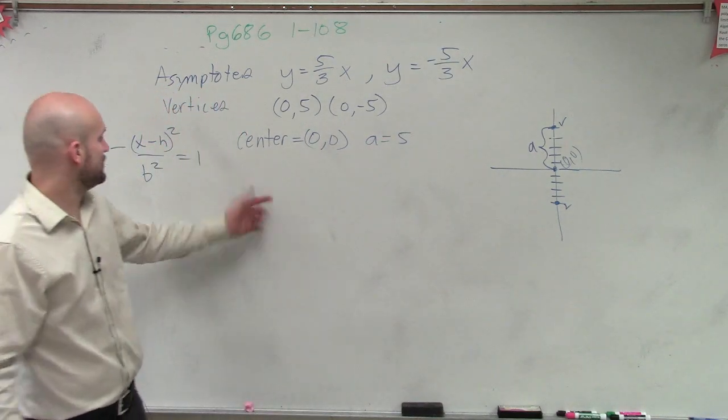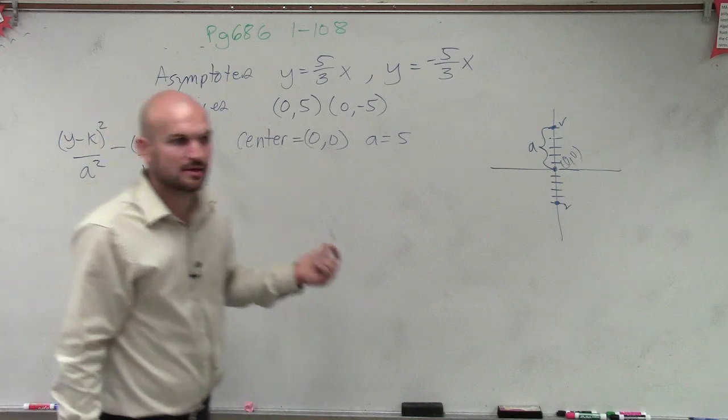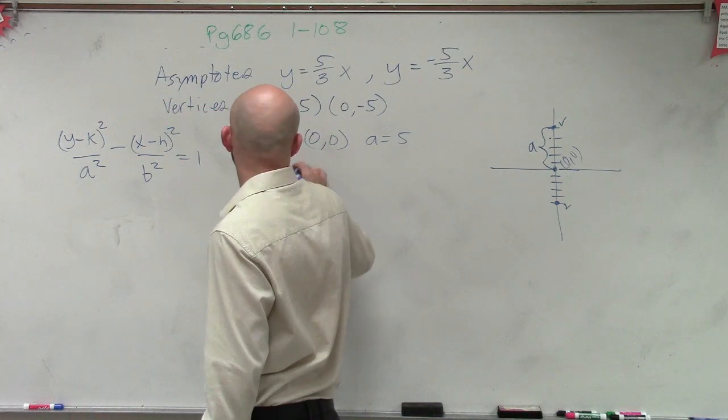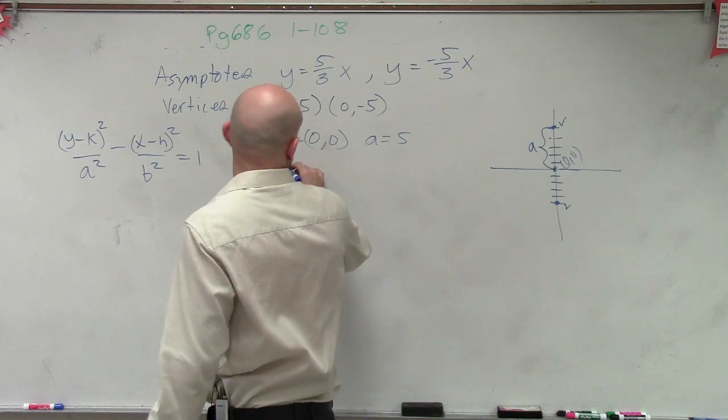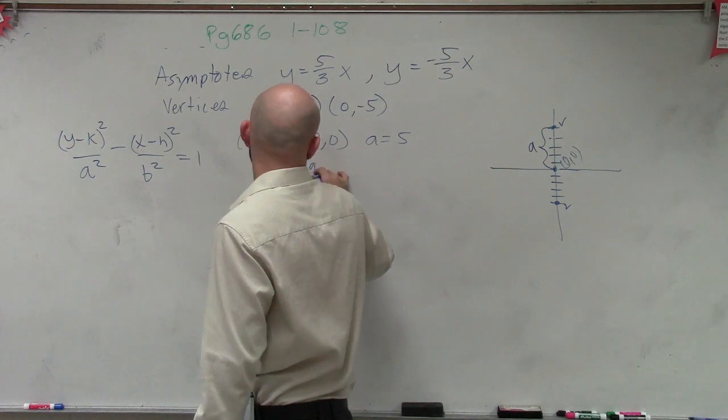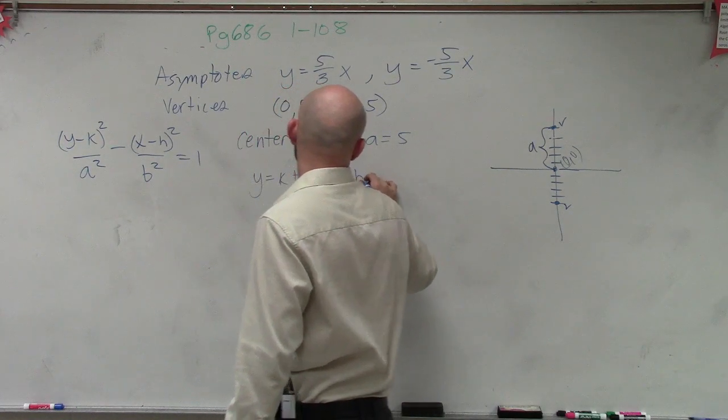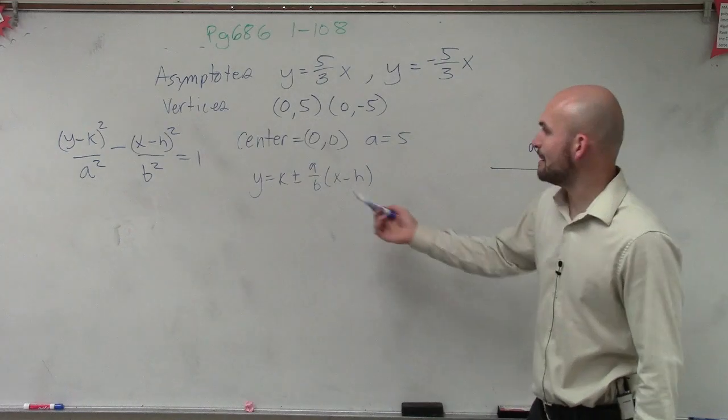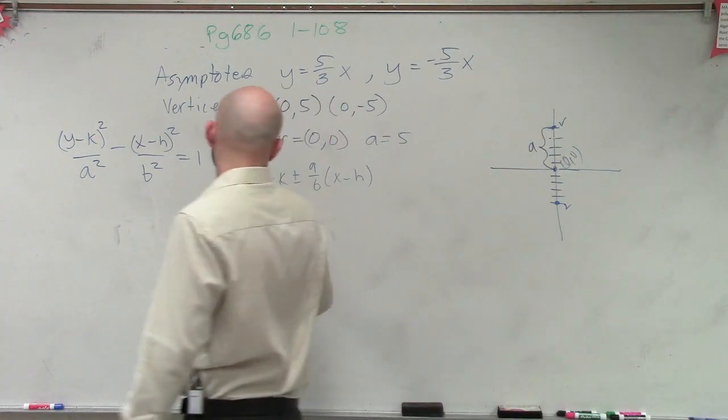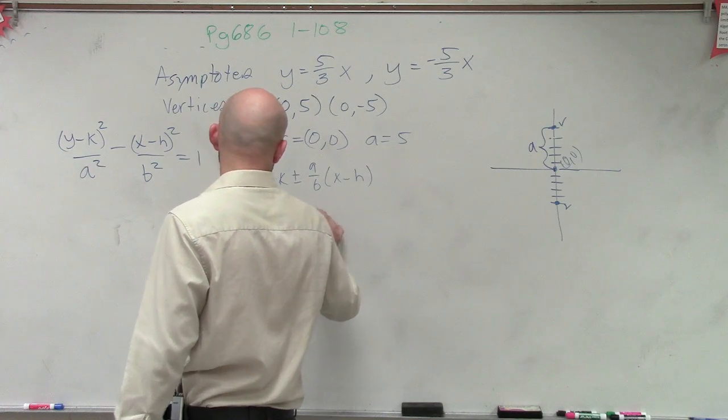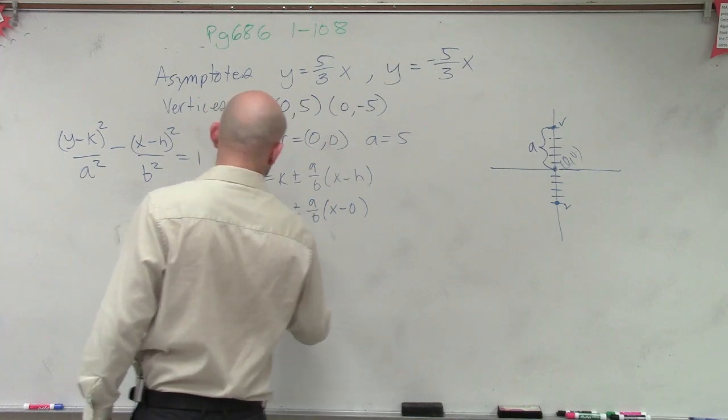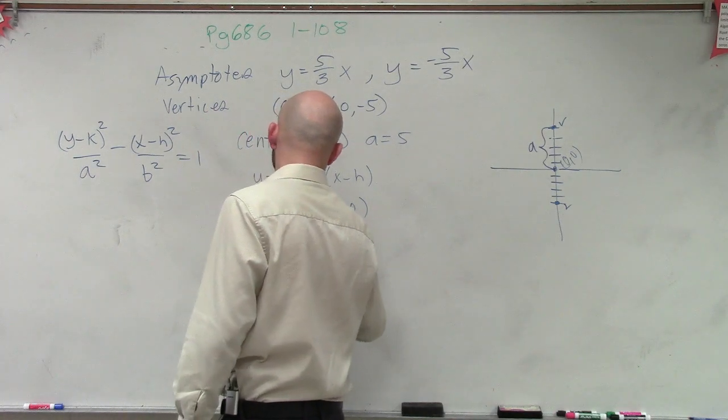So they gave us the asymptote. And remember, asymptotes come in the form of, for this is vertical, so it's k plus or minus a over b times x minus h. But remember, our h and k are 0. So y equals 0 plus or minus a over b, x minus 0, which is really y equals plus or minus a over b.